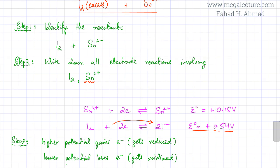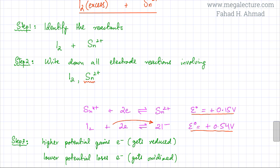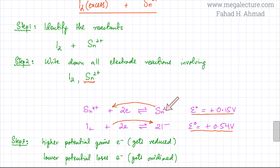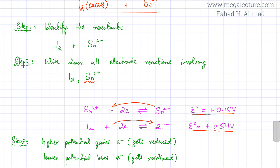After removing that electrode, I just have one choice left: the Sn²⁺/Sn⁴⁺ electrode. That's the lowest remaining potential, so it's the one that loses electrons. The reaction goes in the backward direction, meaning Sn²⁺ loses electrons to form Sn⁴⁺. We do have Sn²⁺ in our reactants, so this reaction fits. I₂ is gaining electrons to form 2I⁻ and Sn²⁺ is losing electrons to form Sn⁴⁺.